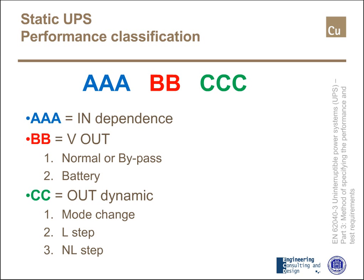The first three letters, AAA, shown in blue, describe the dependence of the UPS output from the input. The red ones, BB, describe the quality and type of the output — the first one in normal operation or bypass, and the second one in battery operation. If we have an S, this means the output is sinusoidal. The last three letters, CCC, in green, describe the dynamic behavior of the UPS output with reference to change of mode, a step of linear load, or a step of non-linear load.